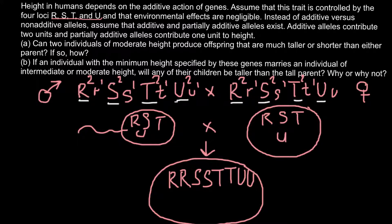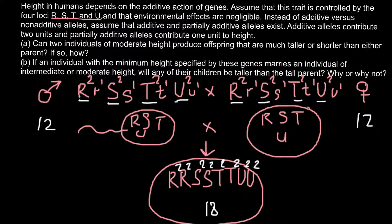If we count the genotype units of the father and mother, we get three plus three is six, plus three is nine, plus three is twelve. So both father and mother score 12 units. The offspring with all capital alleles would score 4 plus 4 is 8, plus 4 is 12, plus 4 is 16 units. So this particular child would be much taller than either parent.